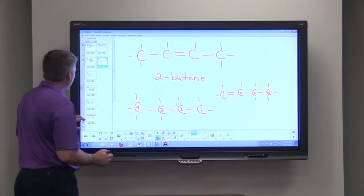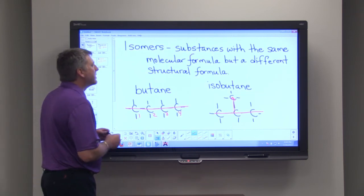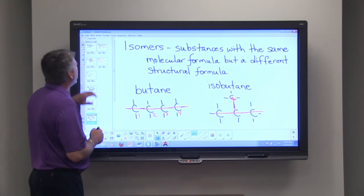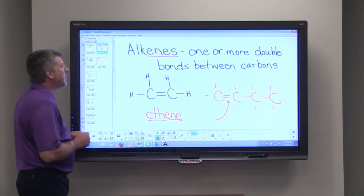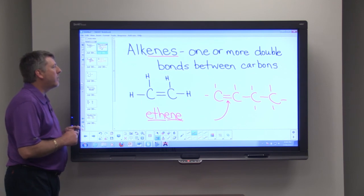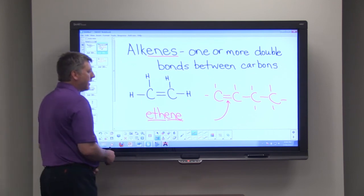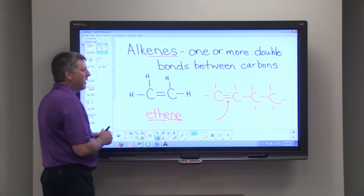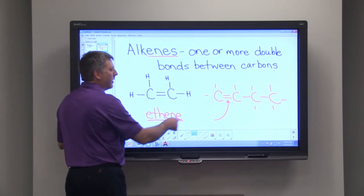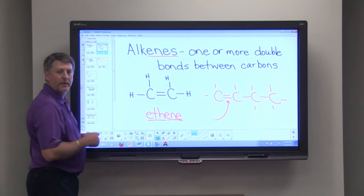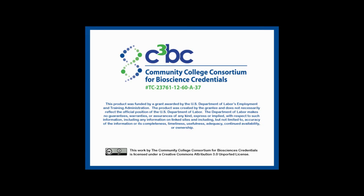So the point, two points that we're trying to make here. One, isomers are substances that have the same molecular formula but different structural formulas. And then alkenes contain one or more double bonds between the carbons. The simplest alkene is ethene. And then we looked at propene and 1-butene and 2-butene.